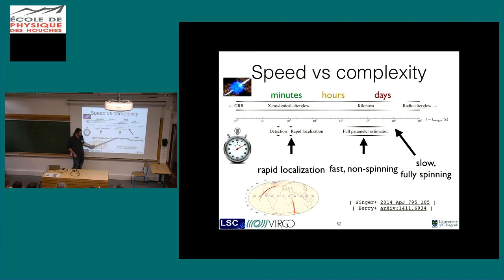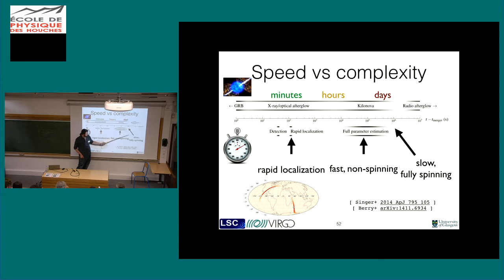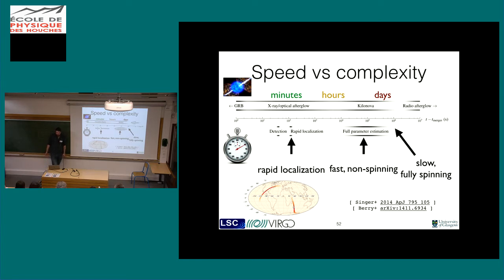In the next observing run, open public alerts will be available to any member of the public - so if you have a telescope in your back garden, you're very welcome to participate in the follow-up. At longer time scales, we want to fully get all the details - all of these parameters, not just the sky location. We use different methods for the full parameter estimation analysis compared to rapid localization. A fast non-spinning or aligned spin analysis can be done in a few hours now. But fully-spinning analyses with the best waveforms tend to be slow and can take days or even weeks.